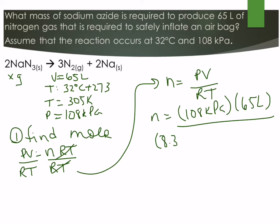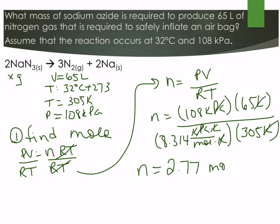So 8.314 kilopascals dot liters over moles dot Kelvin times our 305 Kelvin. So our Kelvins cancel, liters cancel, kilopascals cancel, and we'll be left with units of moles. And we get 2.77 moles. And that's our moles of nitrogen gas because that's what we have enough information for.